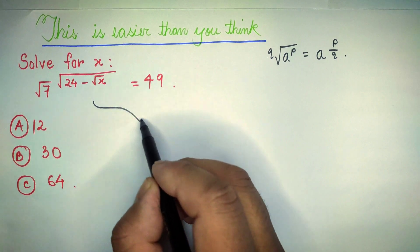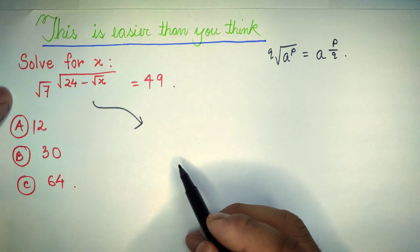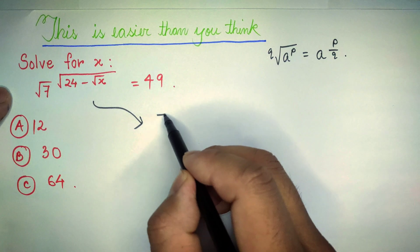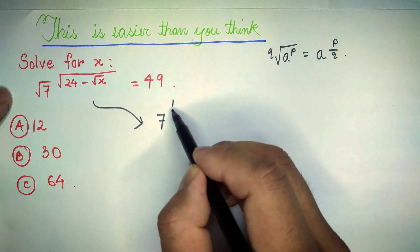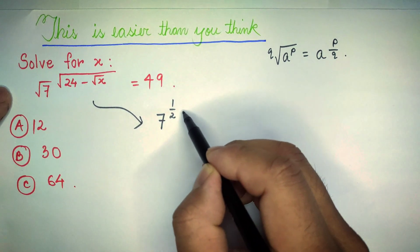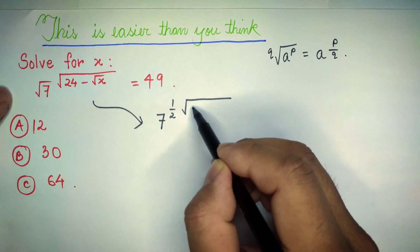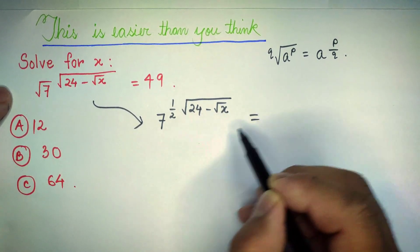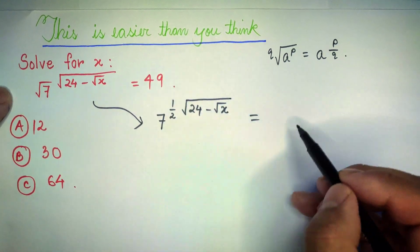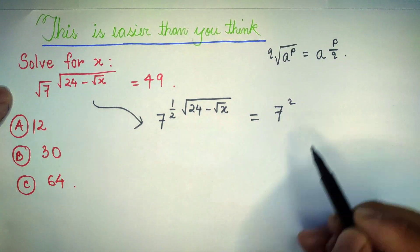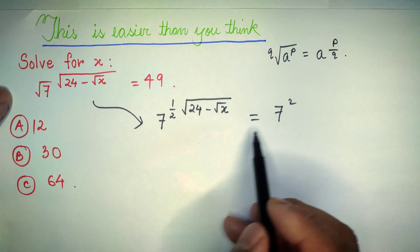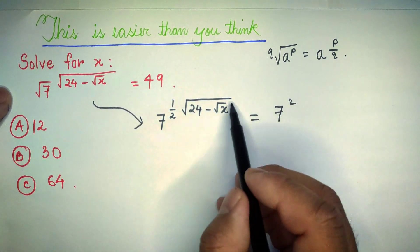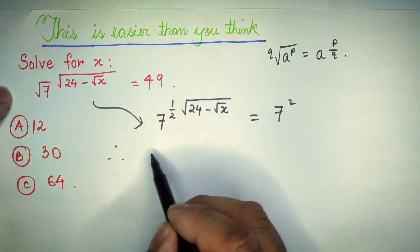Let's solve it. Here, root over 7 can be written using this formula as 7 to the power 1 by 2, raised to the power (root over 24 minus root over x), and this is equal to 49, which can be written as 7 squared. We see that the two bases are equal, so the exponents will also be the same.